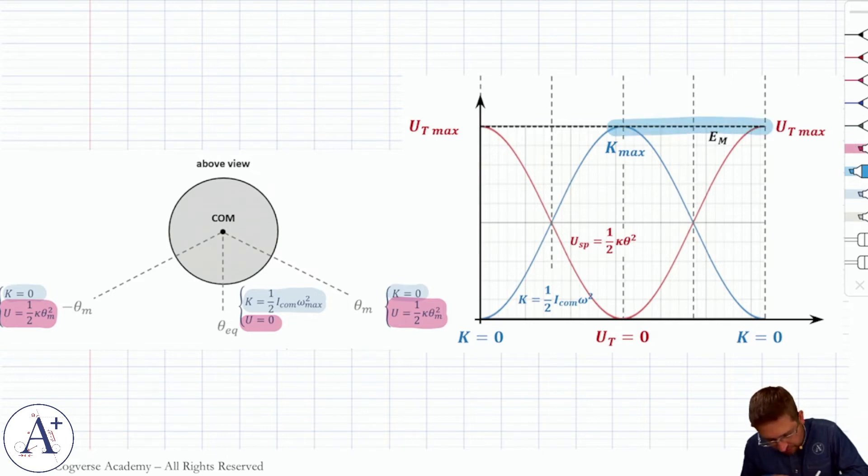Hence, this curve for the torsional potential energy. And of course, as we've seen previously, if you add both curves, you get mechanical energy which is constant. So pretty straightforward to graph these energies or to infer from a graph who's who.